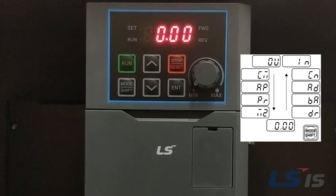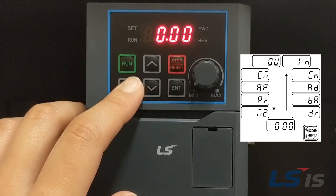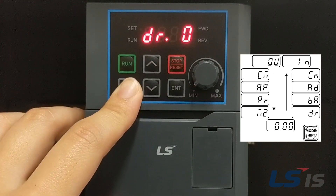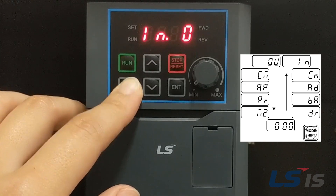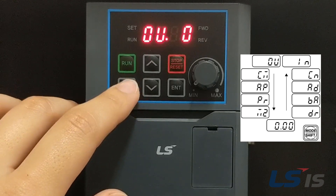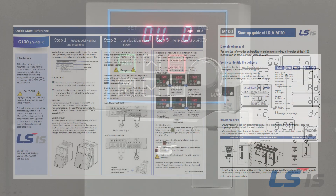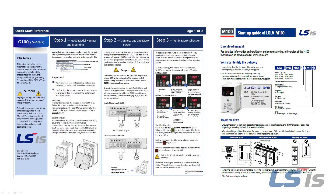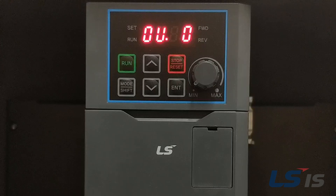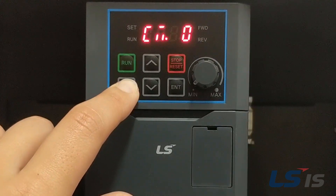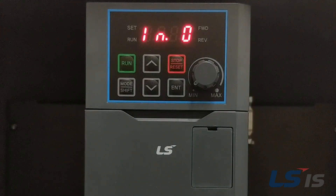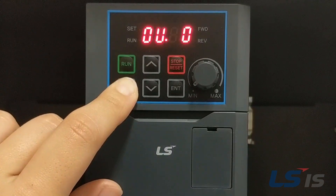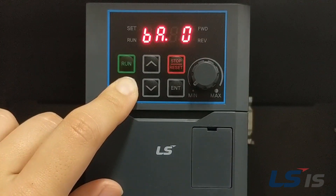The Mode Shift key is also used to display the various parameter groups. In addition to the operation group, there is also Drive, Basic, Advanced, and other groups. For a list of specific groups and parameters, refer to the G100 or M100 manual or Quick Start reference. You can also press and hold the Mode Shift key for a second to go to the previous group, and pressing and holding down for longer will allow you to cycle through the groups in the opposite direction.